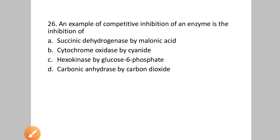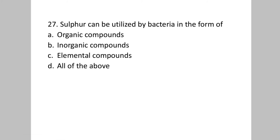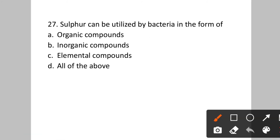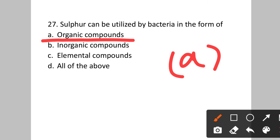Question number twenty-seven: Sulfur can be utilized by bacteria in the form of? Option A: organic compounds. B: inorganic compounds. C: elemental compounds. D: all of the above. Sulfur is utilized by bacteria in the form of organic compounds. Answer will be option A.